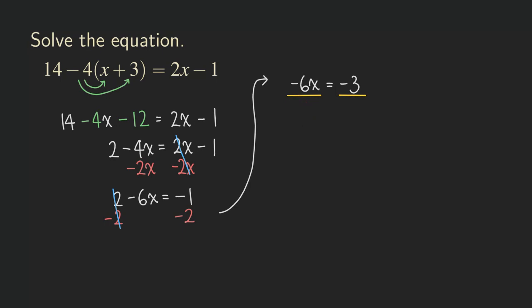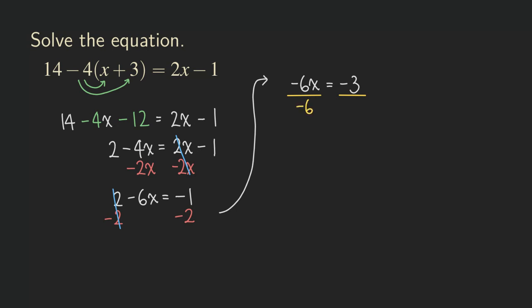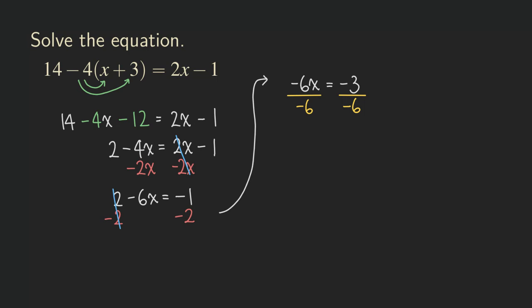And so you can see that negative 6 divided by negative 6 will give you a positive 1. So now that becomes a 1. And then this negative 6 also becomes a 1.